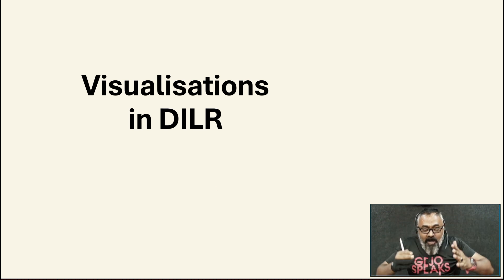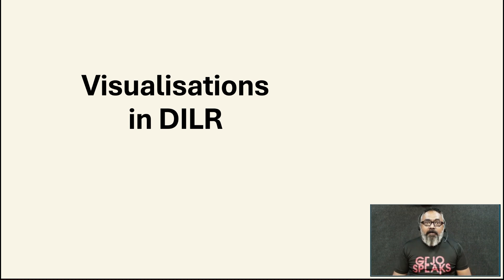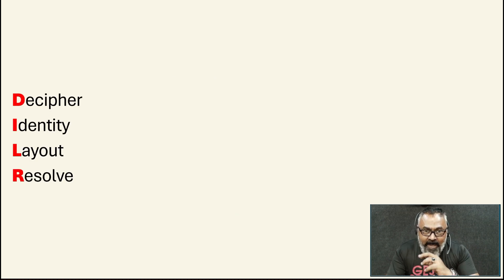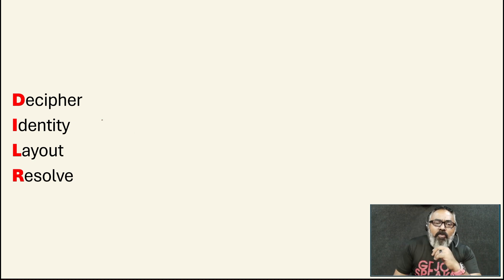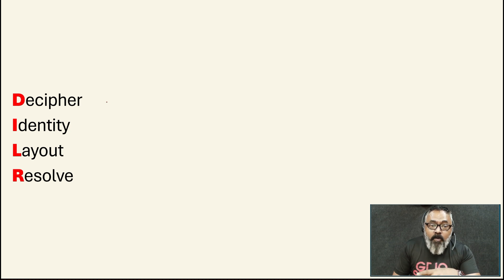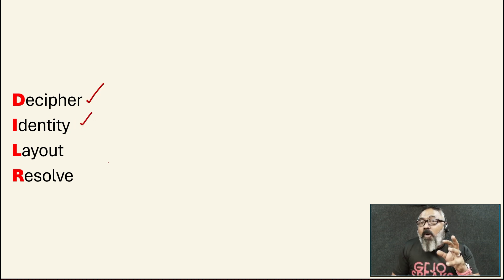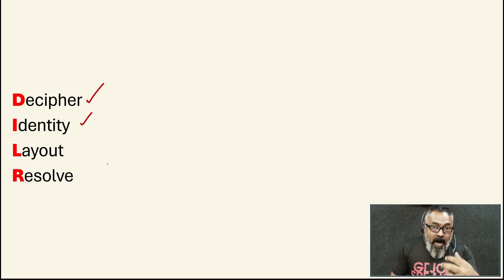What we've got to do is capture that on your paper. When you look at any of these DLR sets, we have a process to deal with. First we have to decipher — we have to read and understand the information given to us. Once we decipher that, the next thing is to identify what the question is asking us to do, and then we will understand what is the path forward.